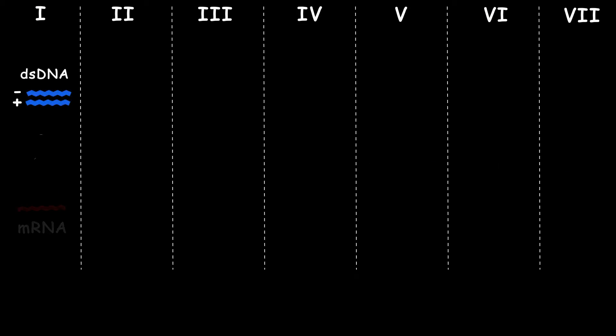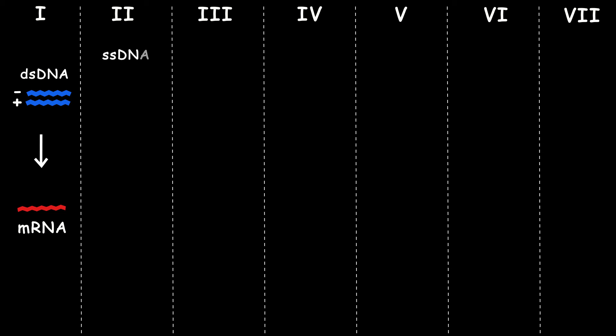Based on this classification — specifically called the Baltimore classification — we have seven different types of viruses. The first group has double-strand DNA like us, and they make their mRNA similarly to how we make it. The second group has single-stranded DNA, and after entering the cells, a double-strand DNA forms first with the help of a specific enzyme called DNA polymerase, and then it can be transcribed to mRNA.